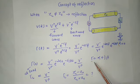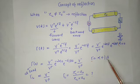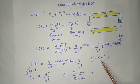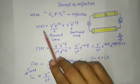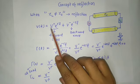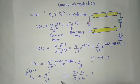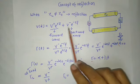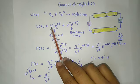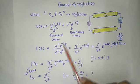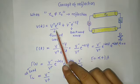Gamma here is the propagation constant. Gamma is a complex number: gamma equals alpha plus j*beta, where alpha is the attenuation constant and beta is the phase shift constant. The total voltage V(l) is the sum of the forward and backward wave components: V(l) = V+ e^(γl) + V- e^(-γl). For example, at location l = 5 meters, V(5) = V+ e^(γ×5) + V- e^(-γ×5).